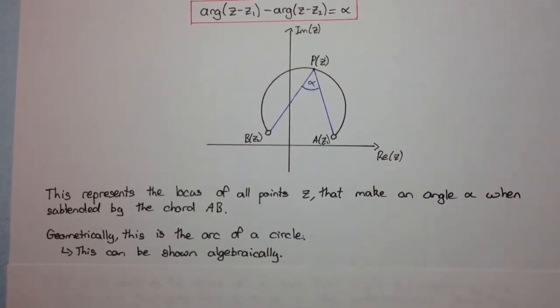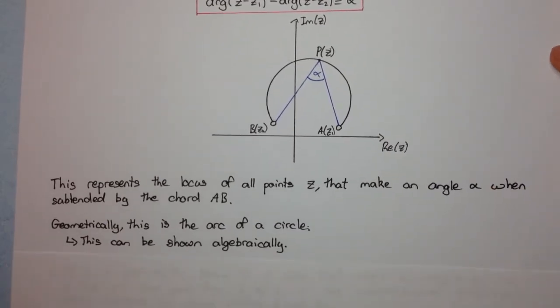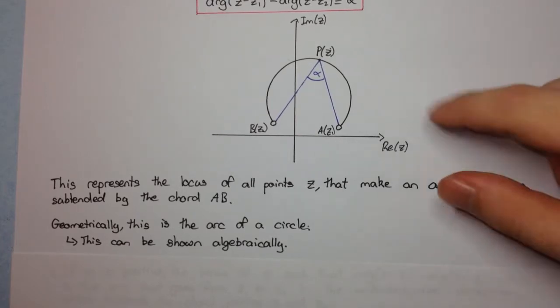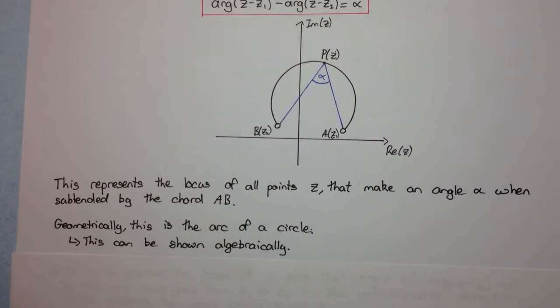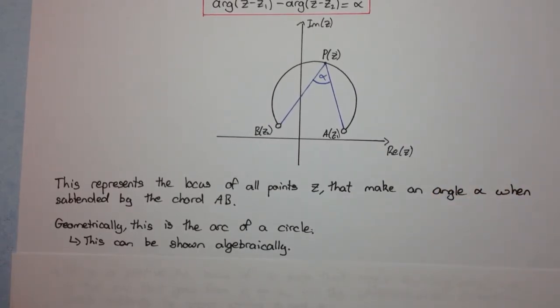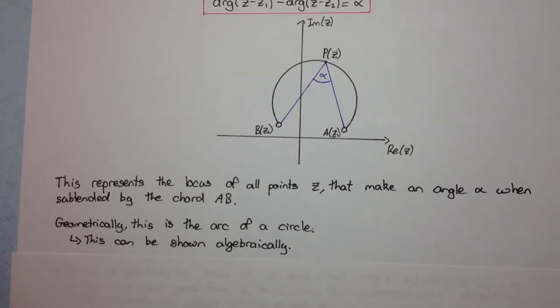And we recognize that this is the arc of a circle. And we can show this algebraically, which I will show maybe in a separate video when we do an example on this type of locus. Right, so this might not become very clear to you straight away. You can use your circle geometry and your properties of triangles to think of this geometrically.